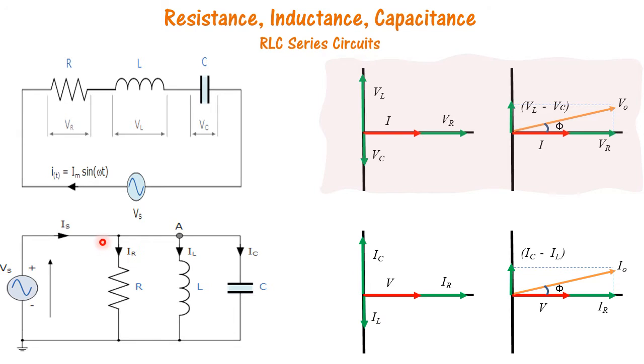In a parallel circuit, since voltage is the same across the various elements, we use voltage as a reference and add these two vectors IC minus IL and IR to get the net current I0 in the circuit.